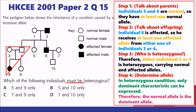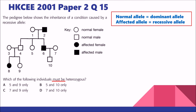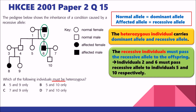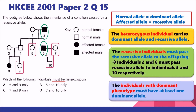You can pause the video and take a look at the logical expression. Returning to the real question — who must be heterozygous? We focus on individuals 5, 7, 9, and 10 from the options. Since all of them are normal, they can be either homozygous dominant or heterozygous. However, looking at the parents — individuals 2 and 6 are homozygous recessive and must pass one recessive allele to their offspring, individuals 5 and 10 respectively. Since individuals with dominant phenotype must have at least one dominant allele, individuals 5 and 10 must be heterozygous.